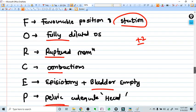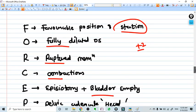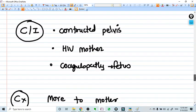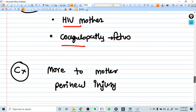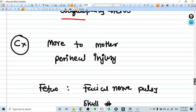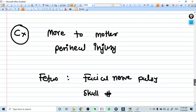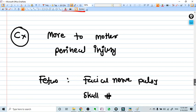So remember this thing. Now severe contraindication, absolute contraindications are contracted pelvis, HIV mother, and fetal coagulopathy, maternal coagulopathy. These are some exact contraindications of forceps.